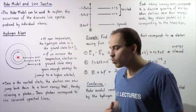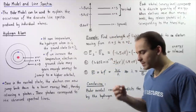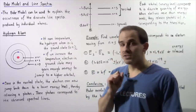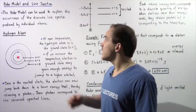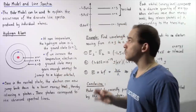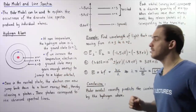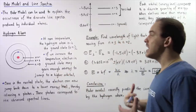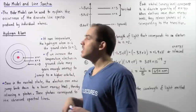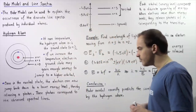So in this lecture, we're going to focus on the latter. We're going to discuss how line spectra produced by individual atoms can be explained using the Bohr model.